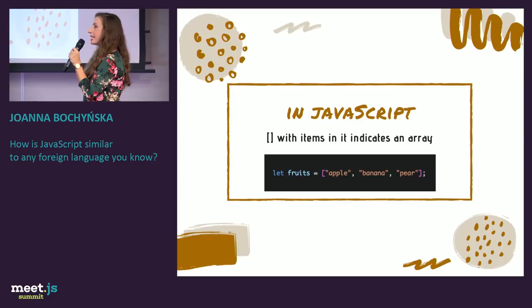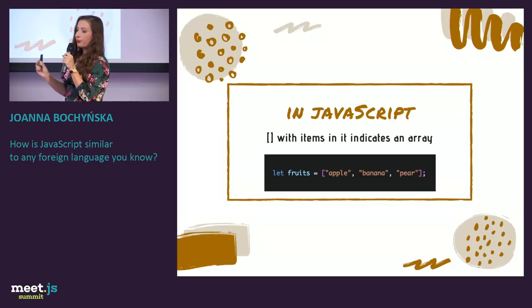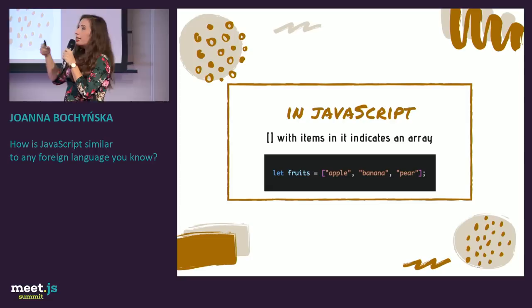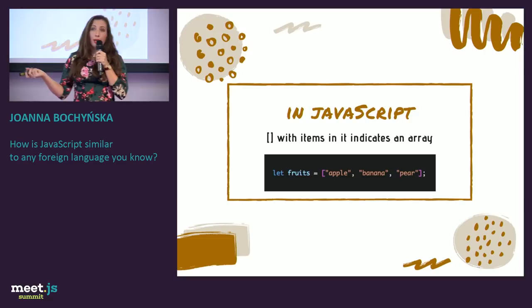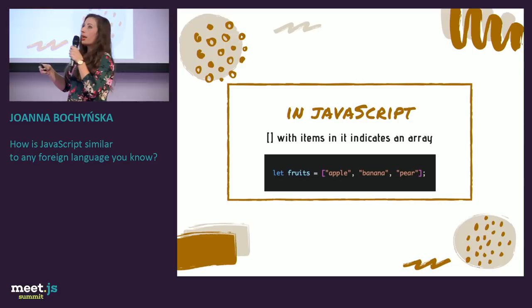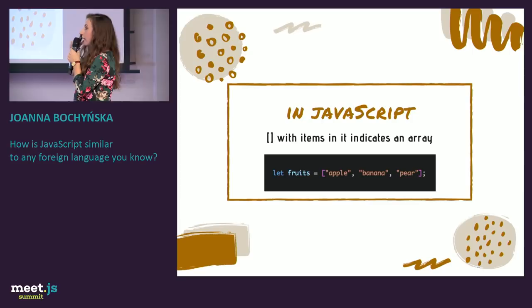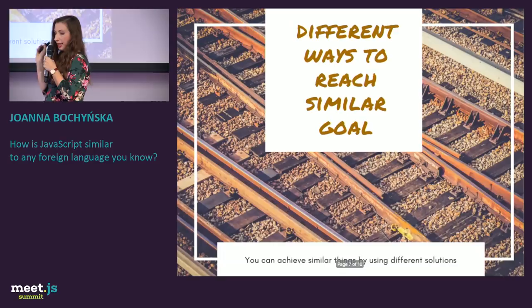How does it apply to JavaScript? My JavaScript examples will be really simple — I just want to show you the concept. Here you can see that square brackets indicate an array. By seeing something like this, you recognize the pattern without knowing all the elements, and this gives you building blocks to go further.